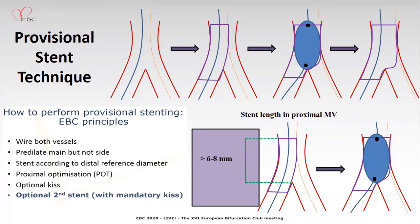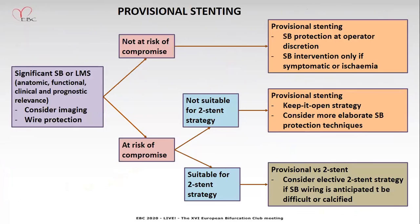The step-wise approach to provisional stent technique: first wire both vessels, pre-dilate the main but not the side branch. Stent according to the distal reference diameter, perform the POT with adequate resized balloon, and optional kissing if there is a sub-optimal result. Even after POT or kissing, if sub-optimal result persists, the option for a second stent — T-stent or T-and-small-protrusion — is available.